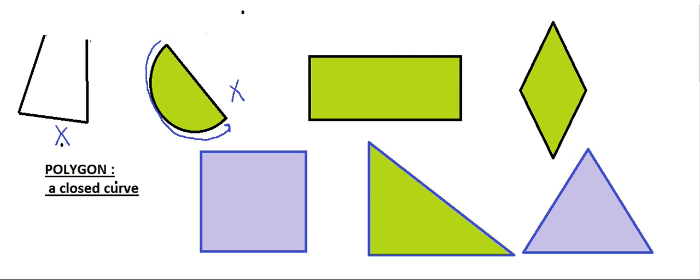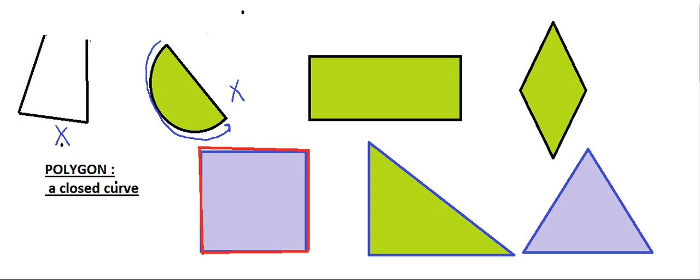Regular polygons have equal sides and equal angle measure. This polygon is a square. A square has all sides equal and all angles are right angles — that is, 90 degrees. These are also equal. So if sides are equal and angles are equal, those types of polygons are called regular polygons. This is a regular polygon.